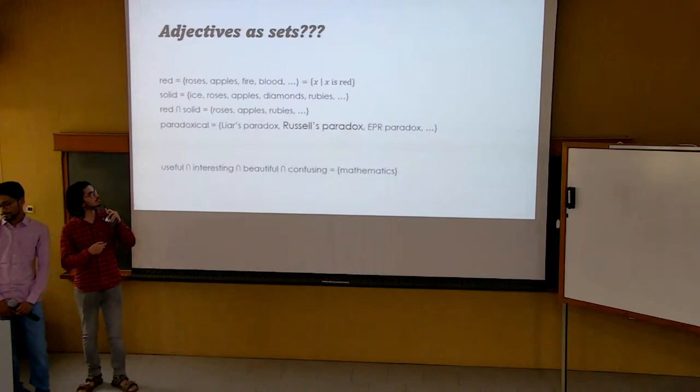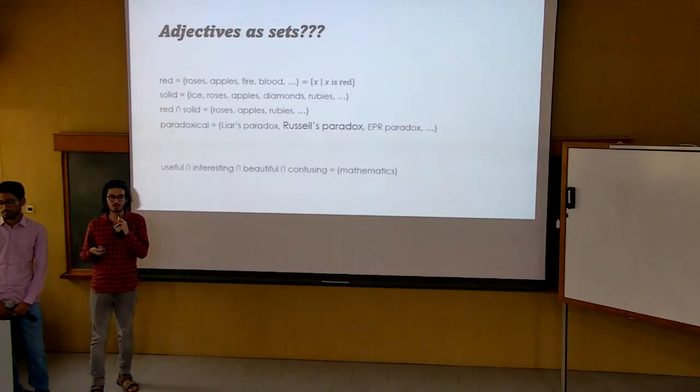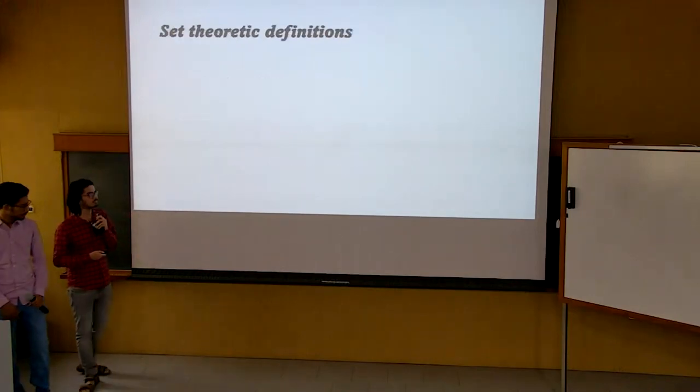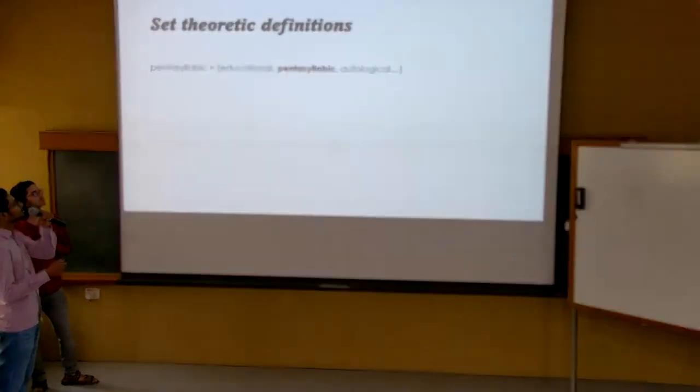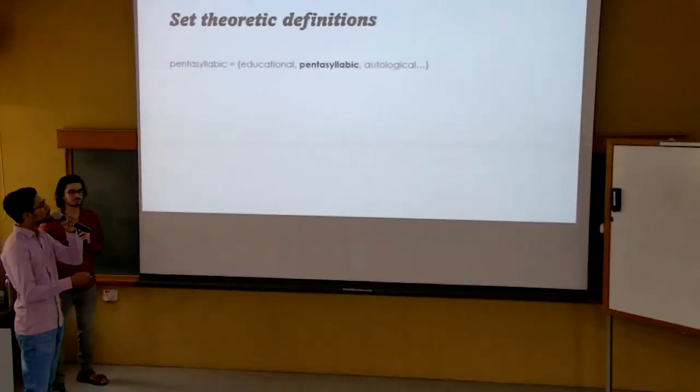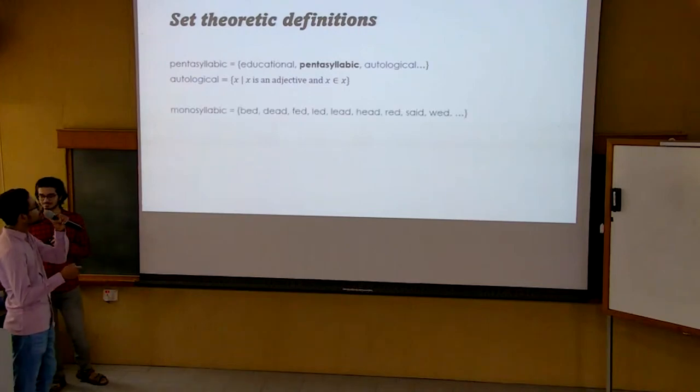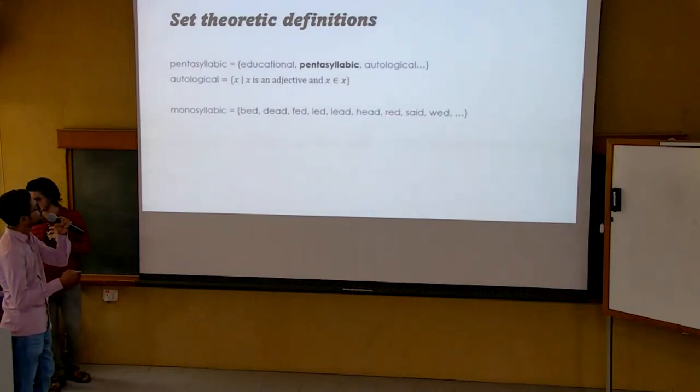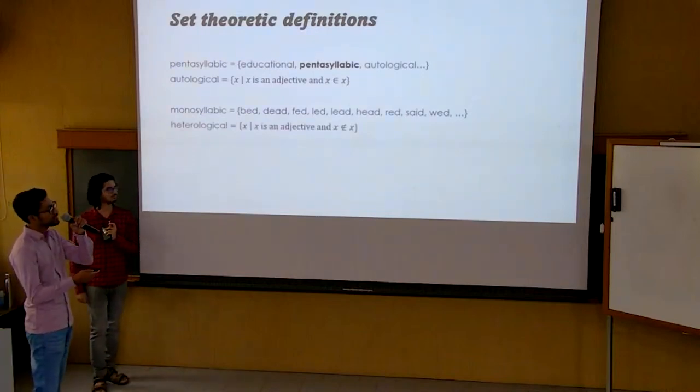With this modeling of adjectives, we will redefine our central keywords, autological and heterological, in the language of sets. Consider the set pentasyllabic, it contains the word educational, autological, but most crucially the word pentasyllabic itself. So this suggests the definition of autological words to be adjectives which contain themselves. Similarly, monosyllabic contains many words which are monosyllabic, but not monosyllabic itself. So heterological can be defined as a set of adjectives which does not contain itself.